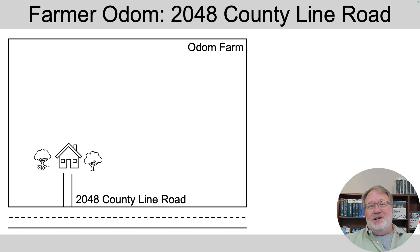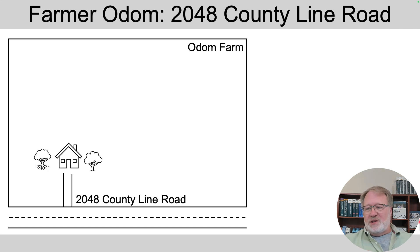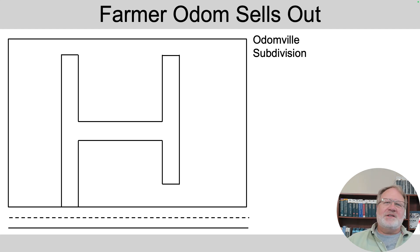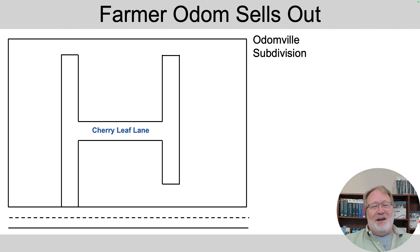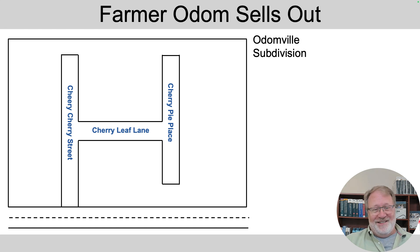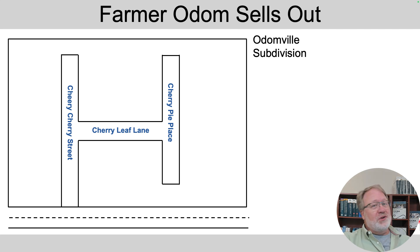Then Farmer Odom got older and decided to sell the land so somebody could develop it into a subdivision. So now we've got this Odomville subdivision with some streets put in — with permits, plumbing, electricity, and all the utilities. They named the streets, and it turns out they couldn't just name them whatever they wanted. The streets had to be unique in this town, otherwise it would confuse the postal workers.